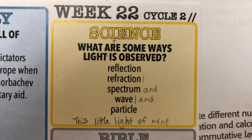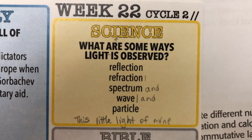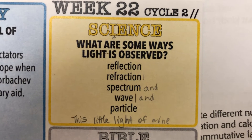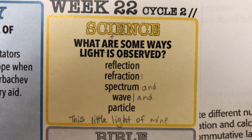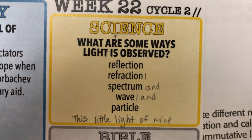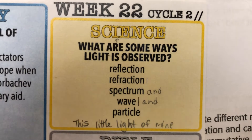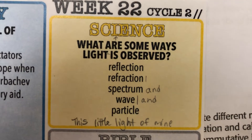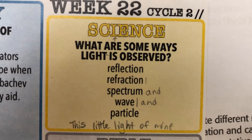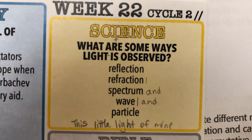What are some ways light is observed? Reflection, refraction, spectrum and wave and particle. Some ways light is observed.